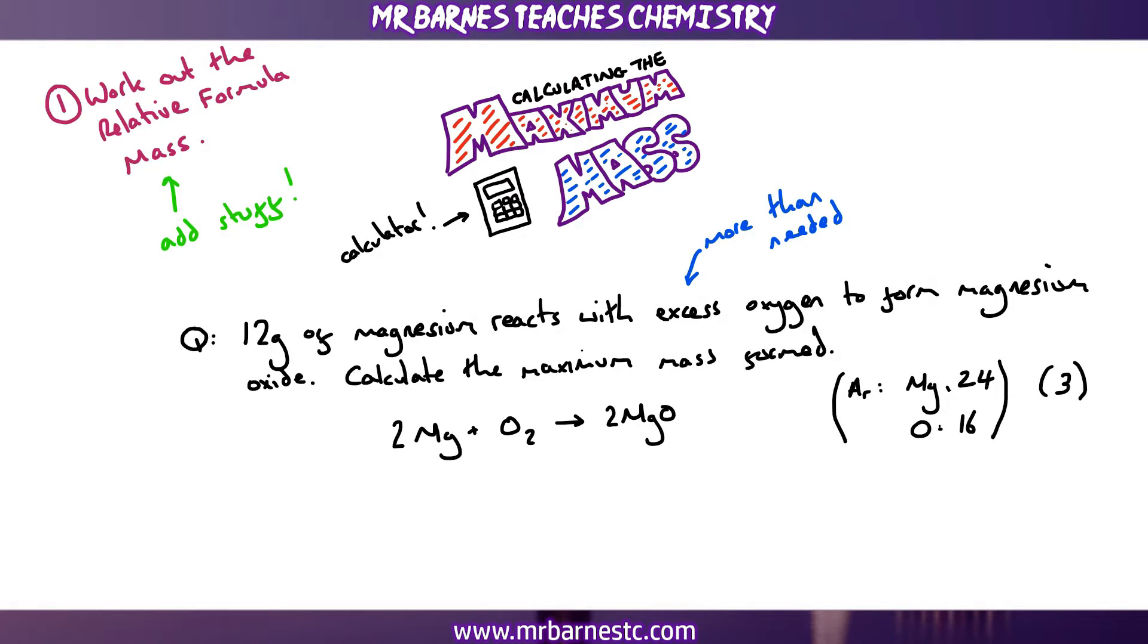So the relative formula mass nice and simply is adding it all up together. So the things that we need from this equation are the magnesium which we've got 2 of them. That 2 in front of the Mg means I've got 2 times whatever my atomic mass of magnesium is which is 24. So 2 times 24 gives me 48. So my formula mass for my magnesium in this reaction is 48.